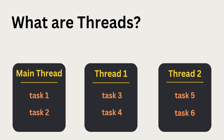First, let's talk about threads. A thread is the smallest unit of processing in an operating system. In modern programs, we often use multi-threading, which means running multiple threads at the same time. For example, a program might download files in the background while still allowing the user to interact with the interface.